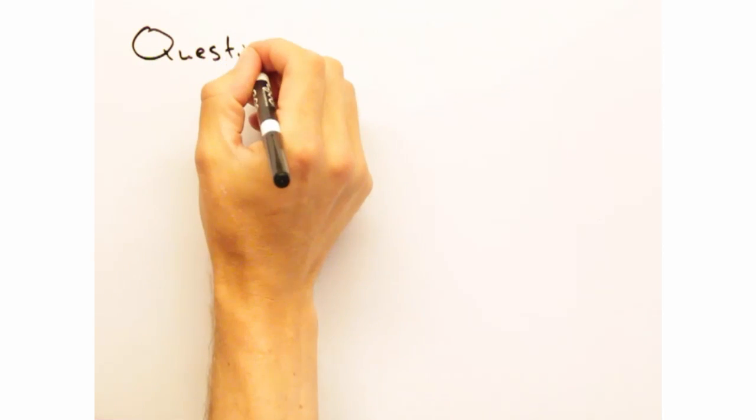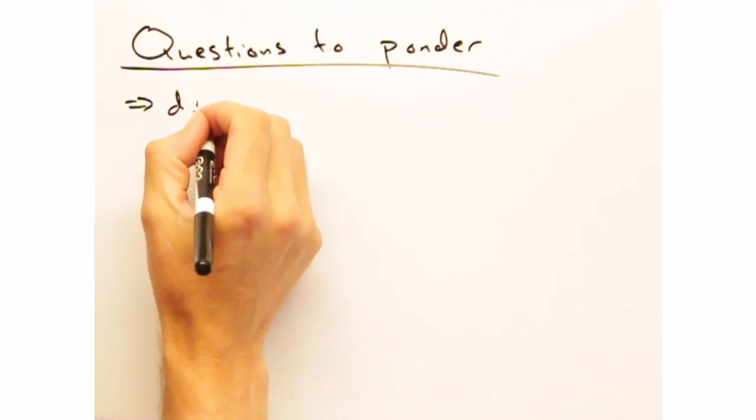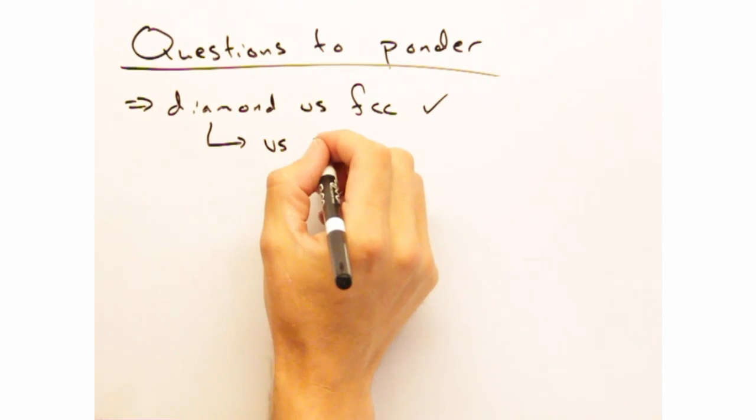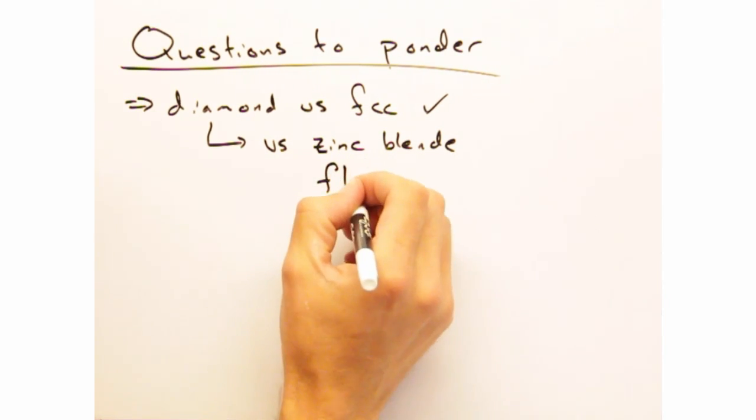Today's questions to ponder are designed to give you some practice comparing different types of structures. For instance, we compared the diamond and FCC structures. It'd be a good idea to look at how diamond is connected to the zinc blend and fluorite structures. I'd suggest you use slices to help you in your comparison.